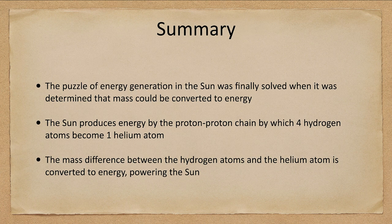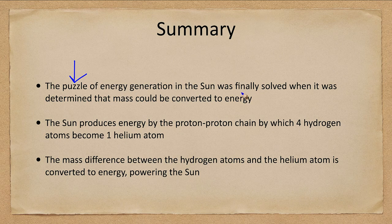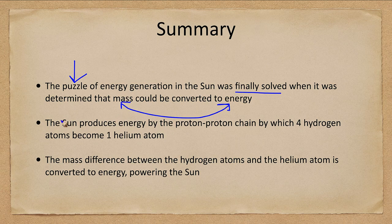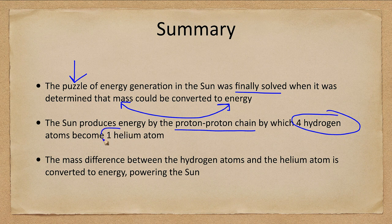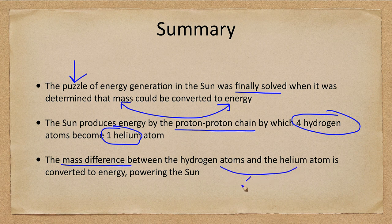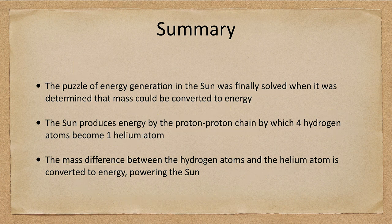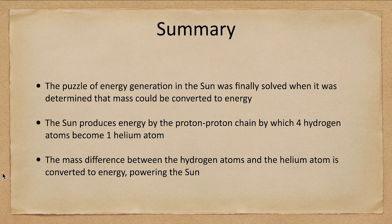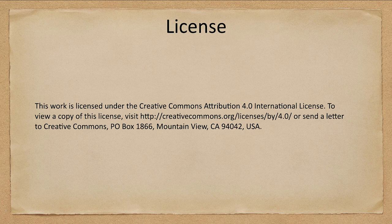Let's finish up with our summary. The puzzle of energy generation was solved when we learned by Einstein that mass and energy were interchangeable. The sun produces energy by the proton proton chain which takes four hydrogen atoms and makes one helium atom. The mass difference between the hydrogen and helium is then converted into energy which powers our sun. That concludes this lecture on solar energy generation. We'll be back again next time for another topic in astronomy. Until then have a great day everyone and I will see you in class.